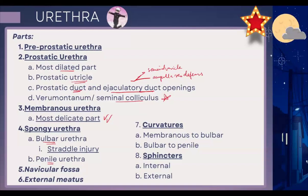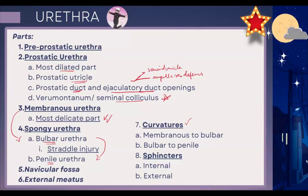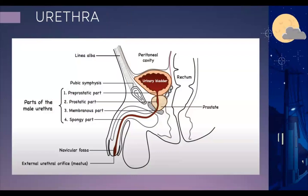Other important parts of the urethra are its curvatures. It has two main curvatures to note: one when turning from membranous to bulbar, and one when turning from bulbar to penile. As it is the urethra, we also have two sphincters — internal and external.